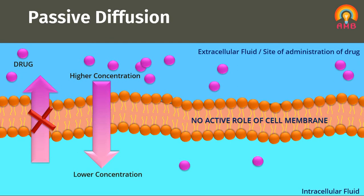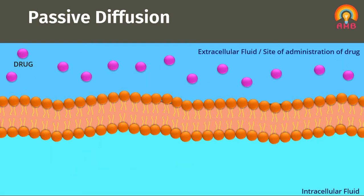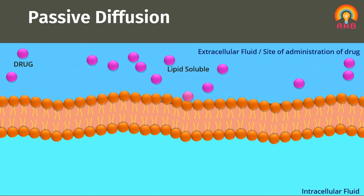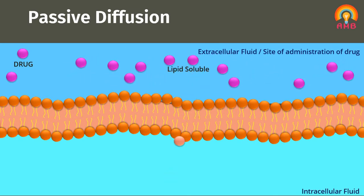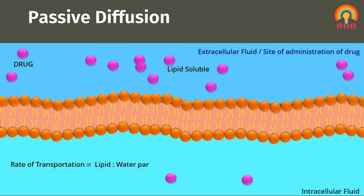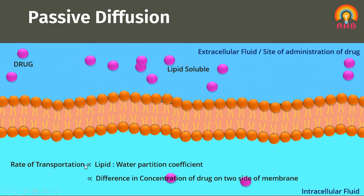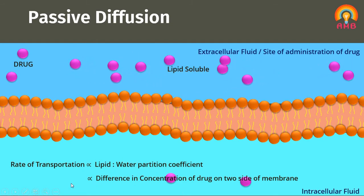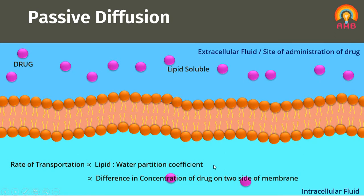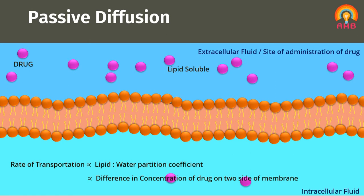This is the most important mechanism for transportation of most drugs. Lipid-soluble drugs diffuse by dissolving in the lipoidal matrix, that is, the phospholipid bilayer of the membrane. Hence, the rate of transportation of the drug is proportional to the lipid-water partition coefficient. The rate of transport is also dependent upon the difference in concentration of the drug on the two sides of the membrane — greater the difference, faster the diffusion.